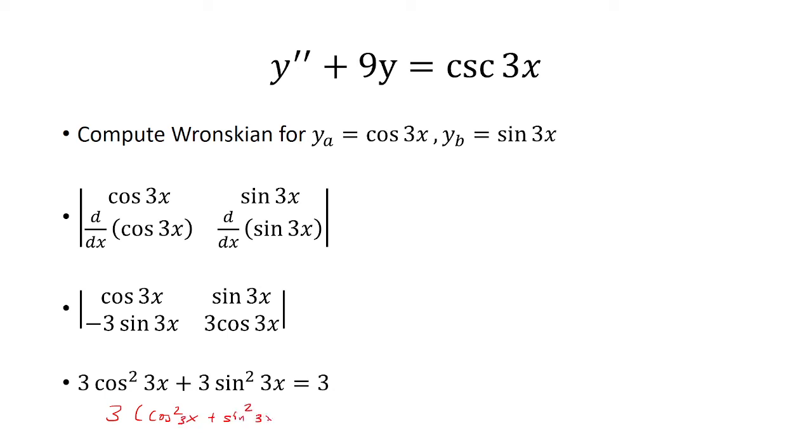And here we can factor out the 3 to get 3 times cosine² plus sine². And don't forget it's 3x. And so this thing is just 1. So it's 3 times 1, which is 3. So the determinant is 3, in other words, the Wronskian.